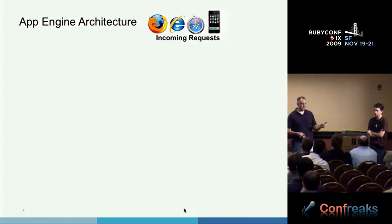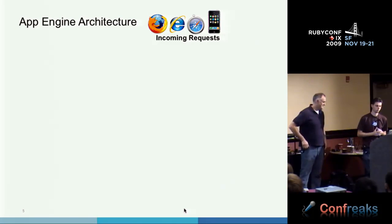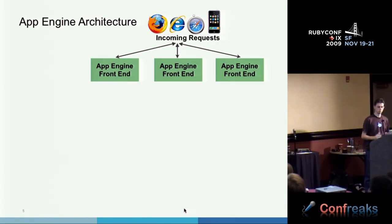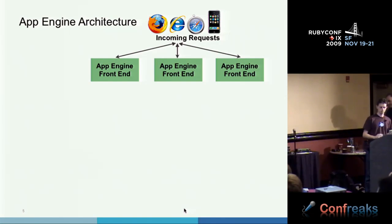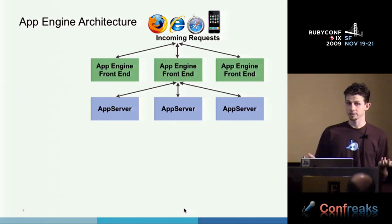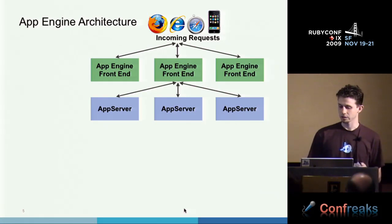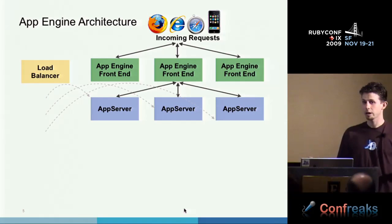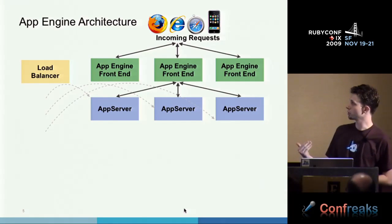Ryan's going to talk about architecture. When a request comes into App Engine, it goes to the closest Google data center, travels through our network to get to the App Engine front end. We've got load balancing here, so you don't have to worry about that. Your application is running on at least three app servers, so you've got automatic redundancy. We automatically bring up more instances of your application as you're getting more traffic.